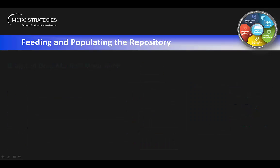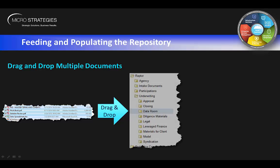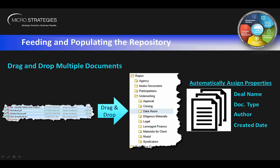That covers single documents, but what about multiple documents? You can drag and drop a bunch of documents into the repository. Here is a snippet from Windows Explorer — select four documents and drag and drop them right into a folder called Data Room for a deal named Raptor. The metadata and properties are automatically assigned: just by dragging them into the Data Room folder, they'll have the deal name assigned as Raptor and doc type assigned as Data Room, making it easy to find these documents later.